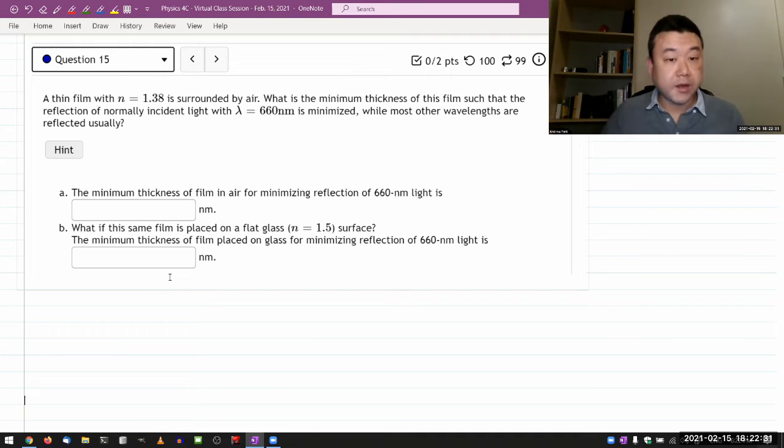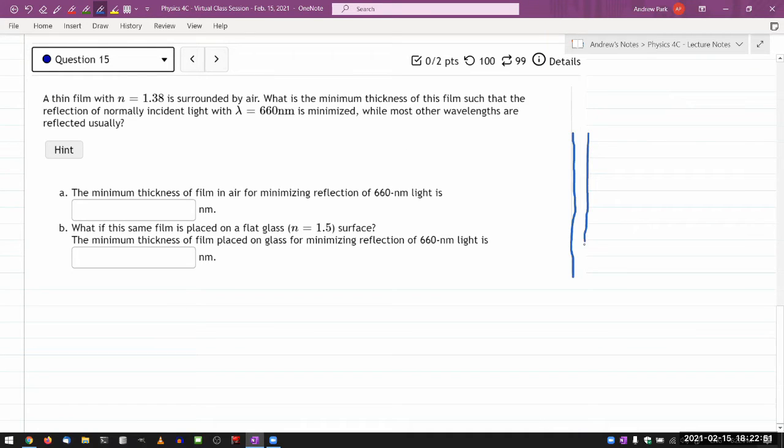Let me draw the film with vertical lines. There's a thin film in air with n=1.38. It's surrounded by air, so n equals 1 here and n equals 1 here. What is the minimum thickness of this film such that the reflection of normally incident light with some given wavelength is minimized? They are looking for destructive interference while most other wavelengths are reflected usually.